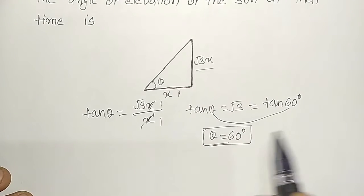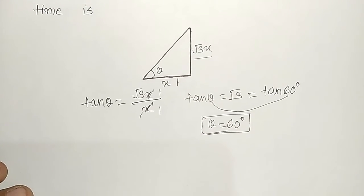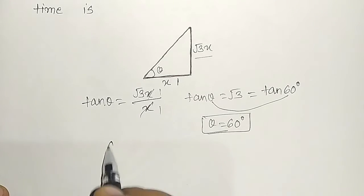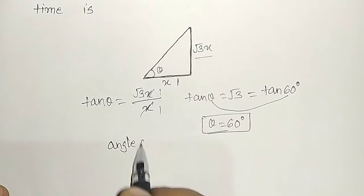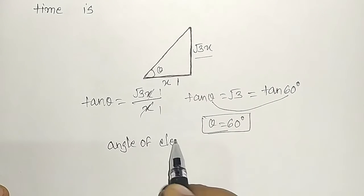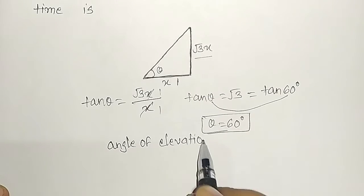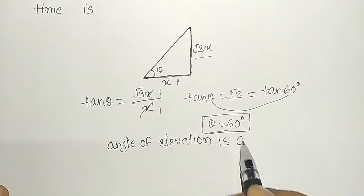The angle of elevation of the sun at that time is 60 degrees.